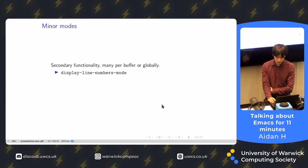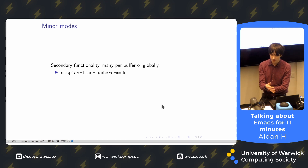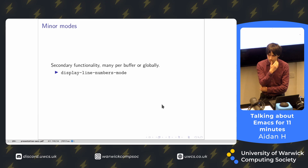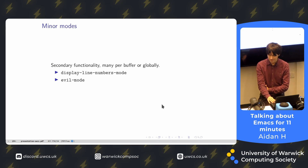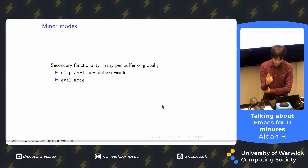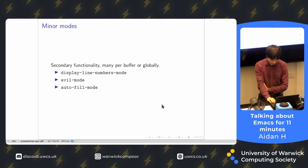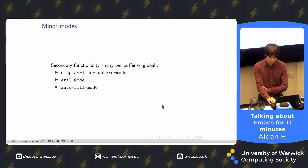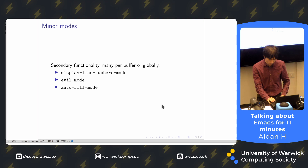Minor modes are for secondary functionality, and this can be anything — including key bindings, line numbers, evil mode (Vim — best editor ever), and also for automatically inserting line breaks while you're typing a paragraph. You also get stuff like spell checkers as minor modes.